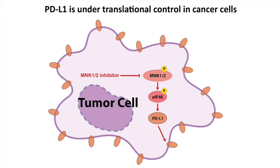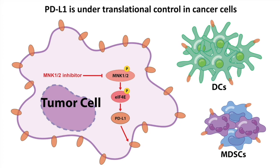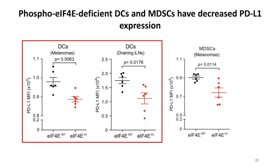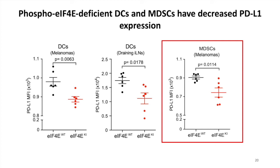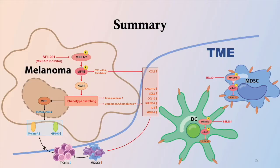It has been reported that Phospho-EIF4E regulates PD-L1 expression in multiple types of cancer cells. Since in a bulk tumor, cancer cells are not the only cell types that express PD-L1, we hypothesized that PD-L1 expression in some immune cells is also regulated by Phospho-EIF4E. Indeed, PD-L1 expression is significantly decreased in both dendritic cells and MDSCs from the knock-in tumor-bearing mice. Functionally, Phospho-4E deficiency enhanced dendritic cell-mediated T cell activation and also impaired MDSC-mediated T cell suppression.